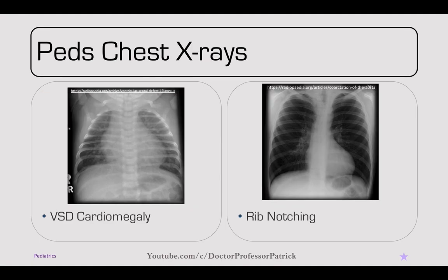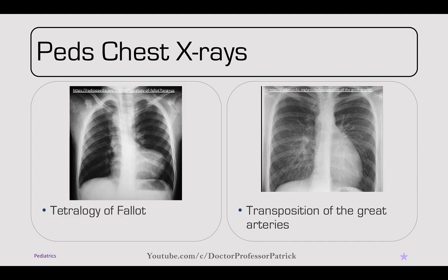Looking at pediatric chest x-rays: cardiomegaly is most likely due to a VSD. Rib notching from coarctation of the aorta with the three sign. Tetralogy of Fallot with the boot-shaped heart. And transposition of the great arteries with that widened mediastinum.